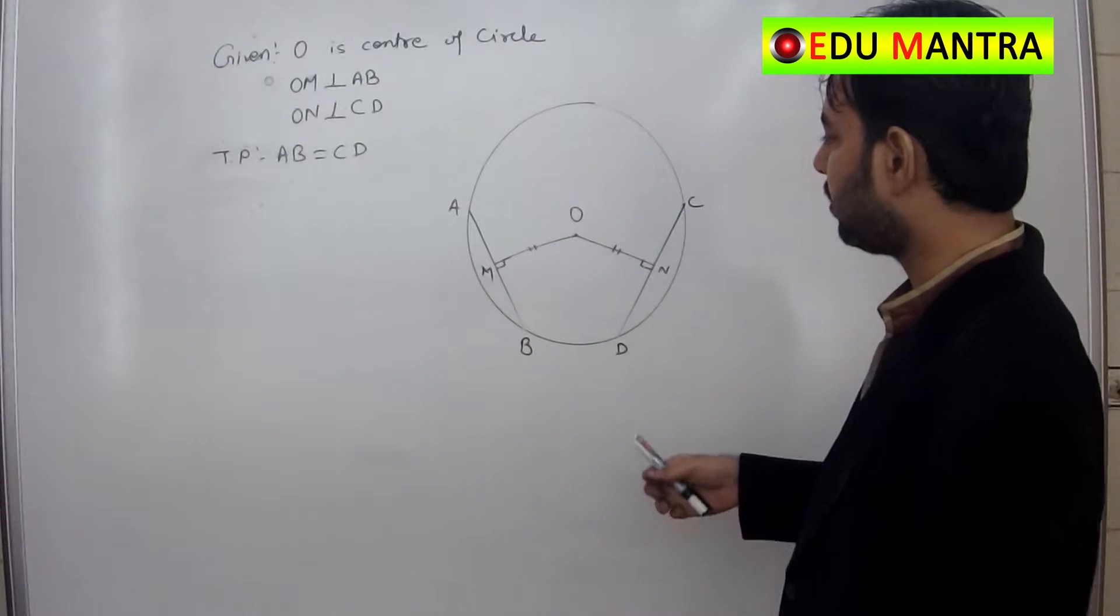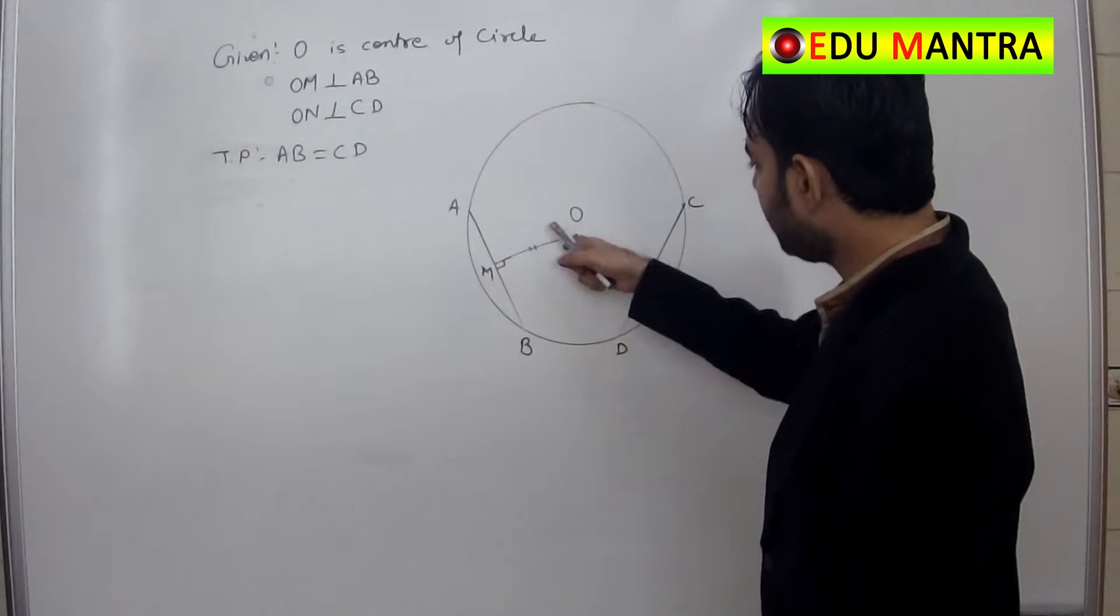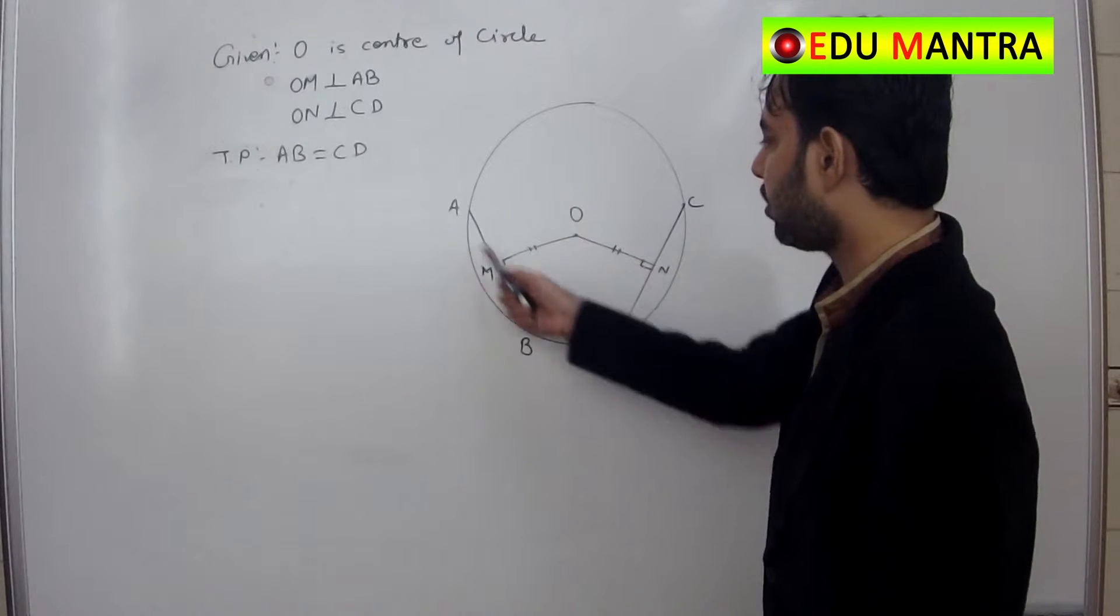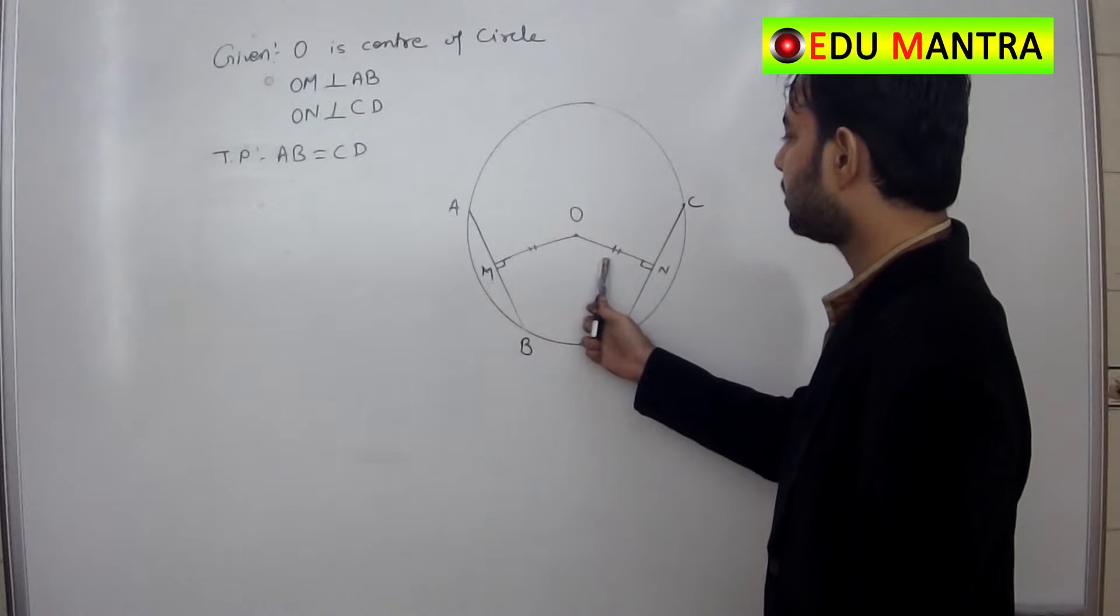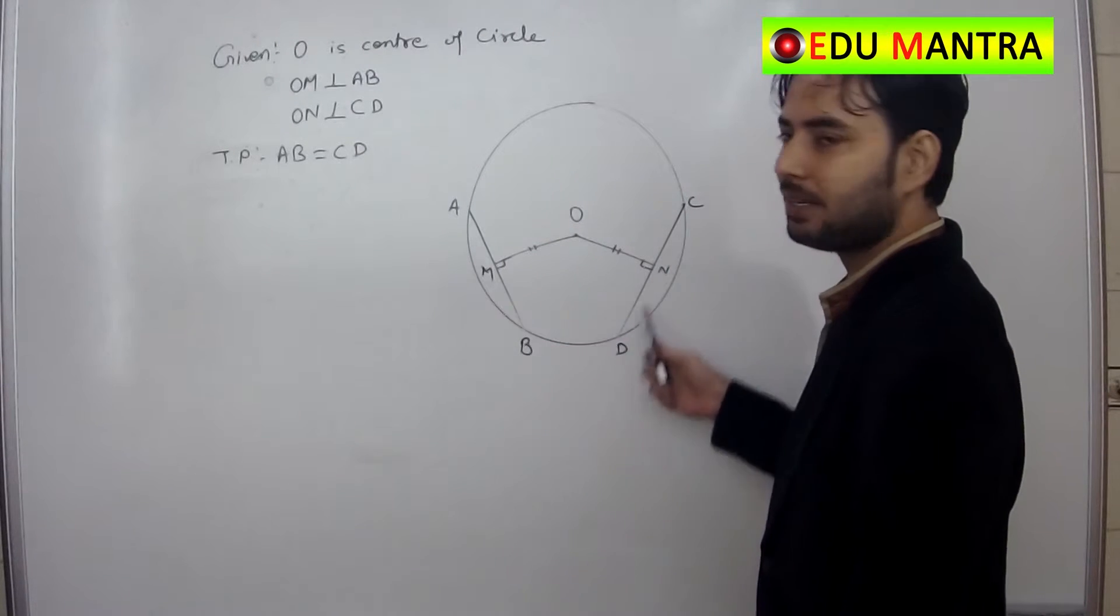So in a same or in congruent circle, chords which are equidistant from the center, these are the chords AB and CD, they are equidistant from the center. Distance from the center to the chord is equal.